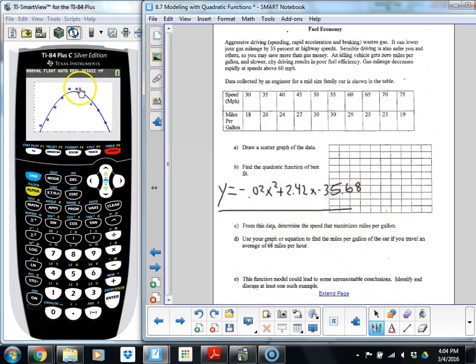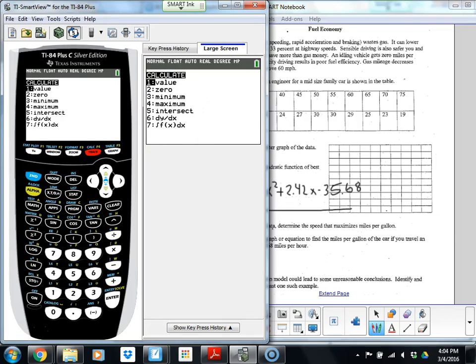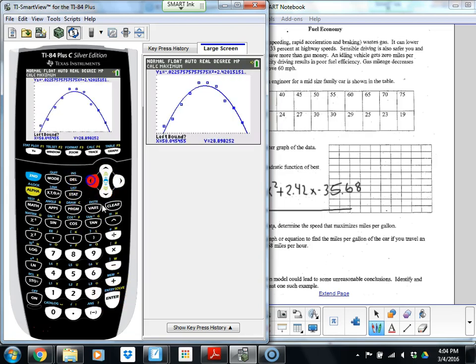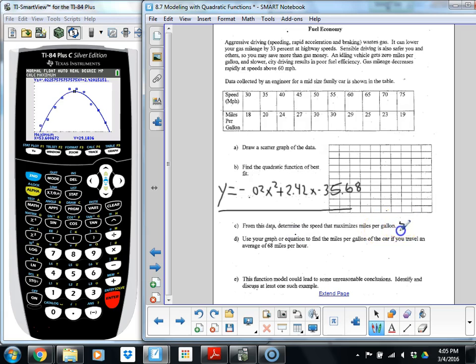Now we can work with our parabola and answer our questions. We've gotten our equation. We found that from our quadratic regression on the calculator. We want to determine the speed that maximizes miles per gallon. So that's going to be at the vertex. In our TI calculator, we can calculate that by going second to calculate. And we go to the maximum. Left bound means get to the left side of the maximum. Right bound means get on the right side of it. And guess. Then it calculates that 53.6 and 29.2 as our X and Y values. We want the speed that maximizes that. So the speed is our X values. So our speed is going to be 53.6 miles per hour. So 53.6 miles per hour is the most efficient speed for this particular car.